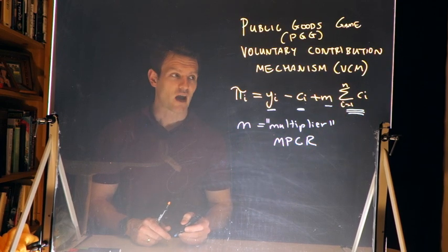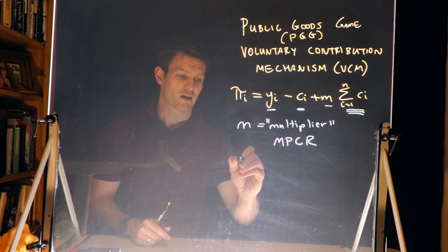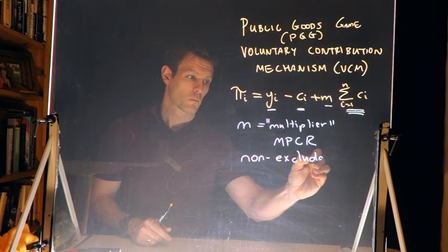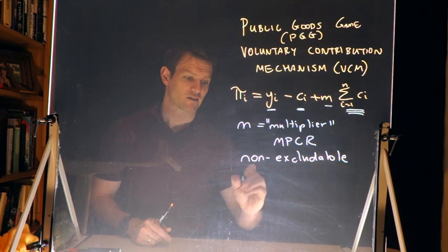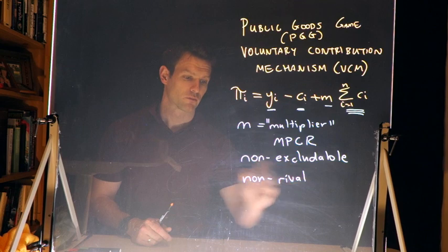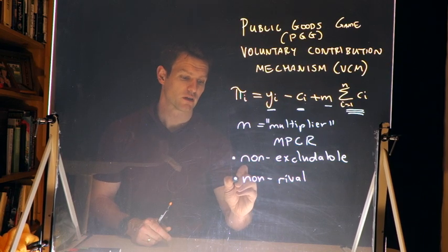Now remember, the characteristics of a public good are that it is going to be non-excludable, and it's going to be non-rival. So it has to be non-excludable and non-rival.